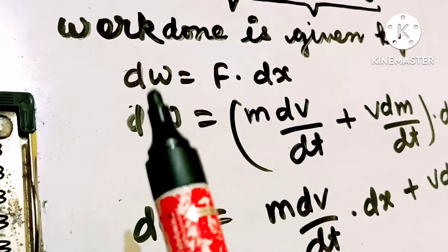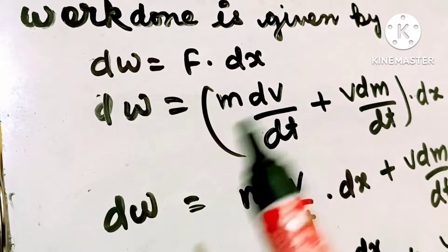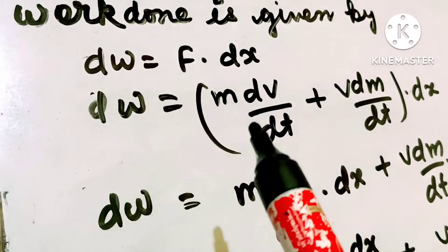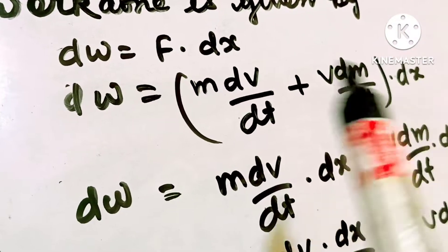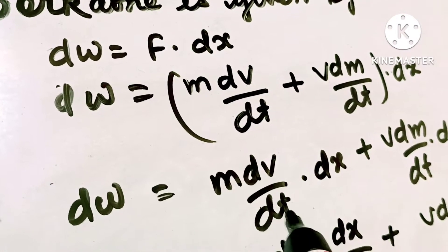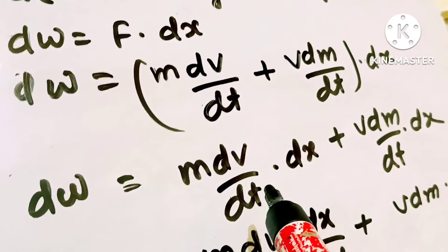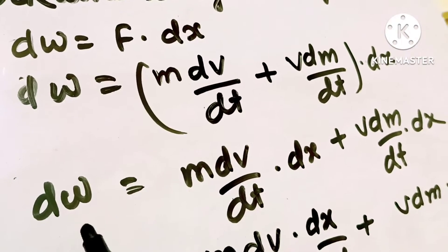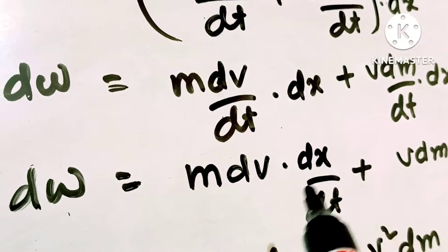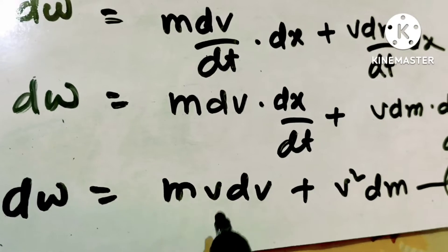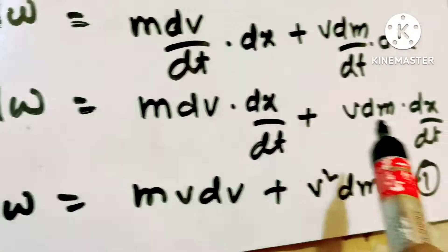Work done is given by dw is equal to F·dx. Substituting the value of F, dw is equal to (m·dv/dt + v·dm/dt)·dx. This becomes m·dv/dt·dx plus v·dm/dt·dx. Since dx/dt is velocity v, we substitute to get dw is equal to mv·dv plus v²·dm, which is equation 1.